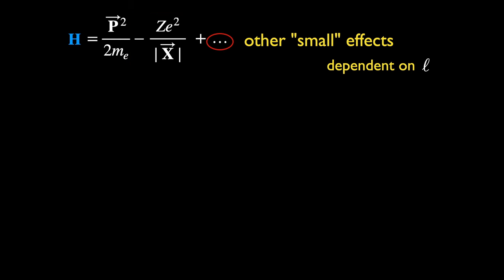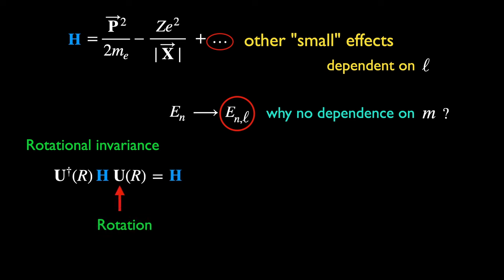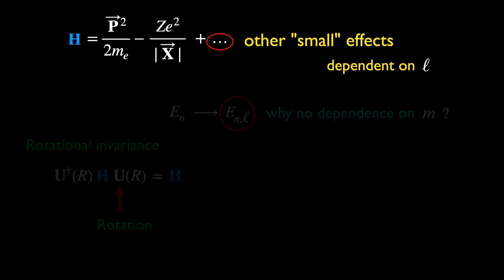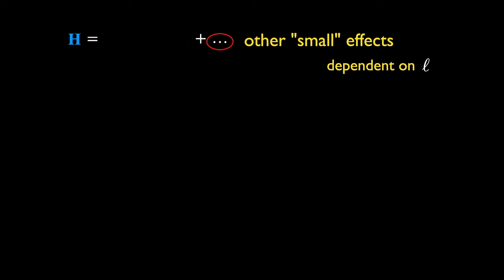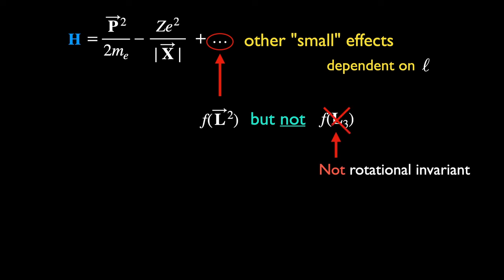Recall that each state also carries the quantum number m associated with the third component of angular momentum. Why doesn't the energy split along the different values of m? This has to do with the rotational invariance of the interactions within the hydrogen atom. In the Heisenberg picture, this means the Hamiltonian must be unchanged by the unitary transformations representing rotations. The only rotationally invariant angular momentum observables can only be a function of l squared — they cannot simply depend on l₃ except in a dot product. Therefore, the energy must necessarily be independent of m by rotational symmetry.